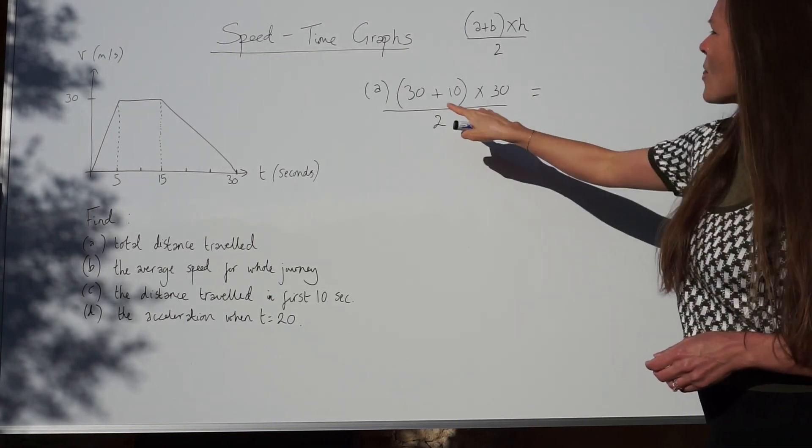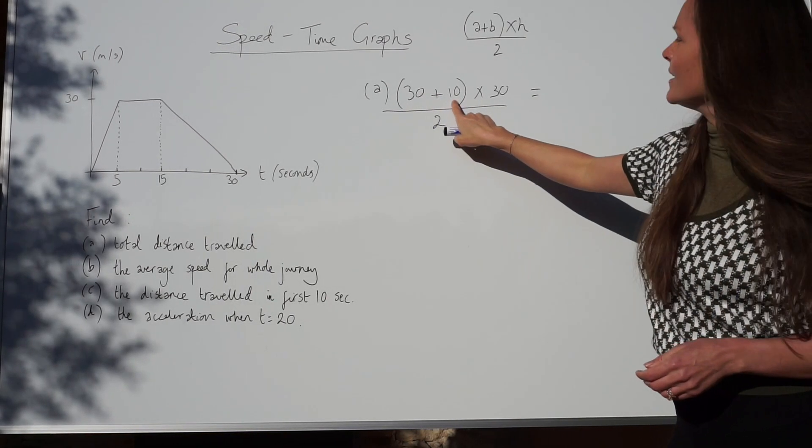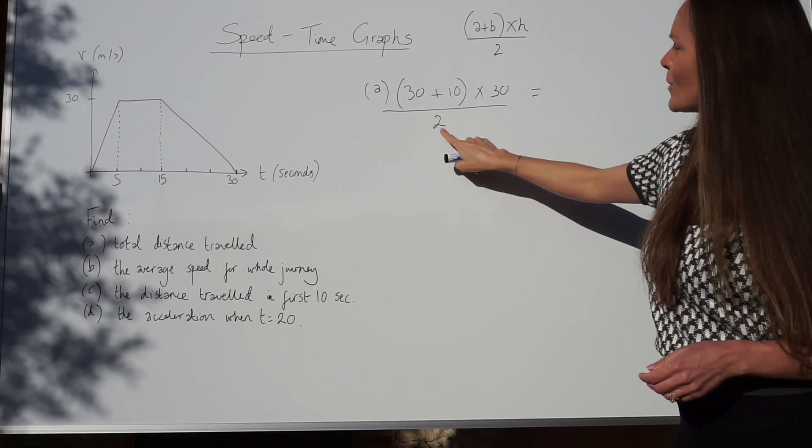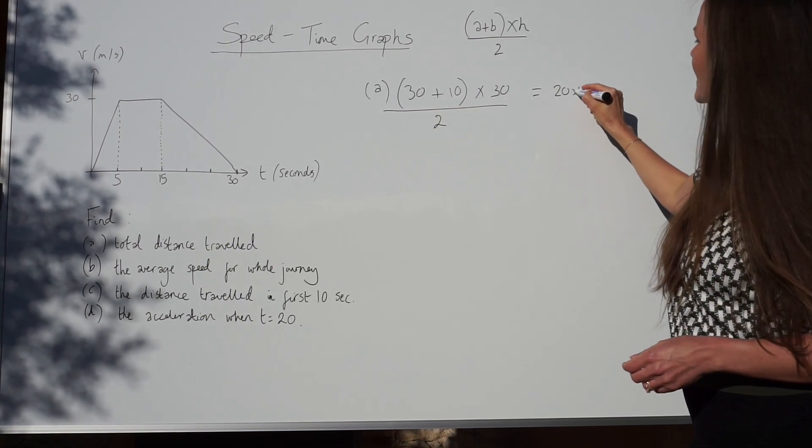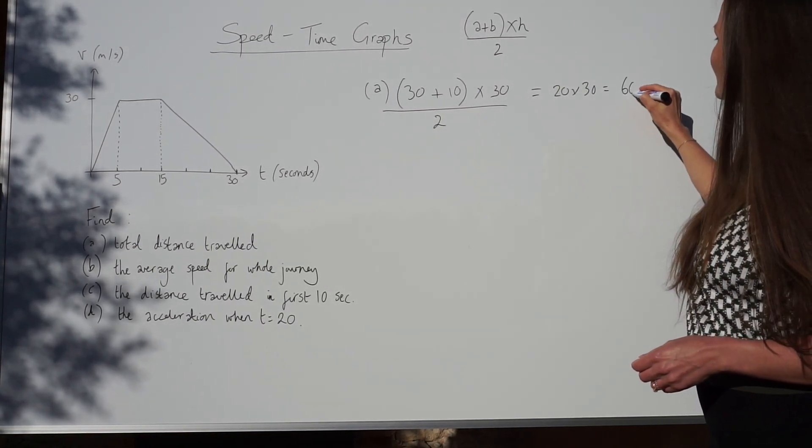And then you always divide by 2 when you're working out the area of a trapezium. So, if I work that out, 30 plus 10 is 40. If I divide that by 2, I get 20. And then if I times 20 by 30, I get 600.